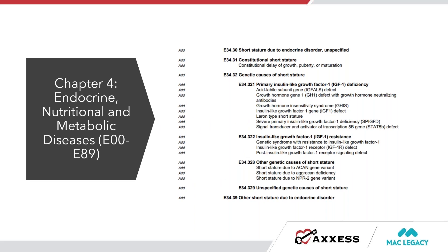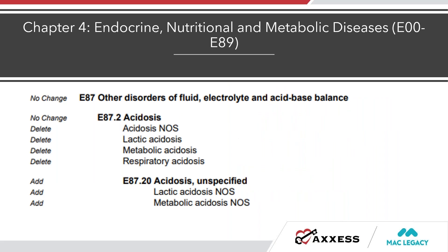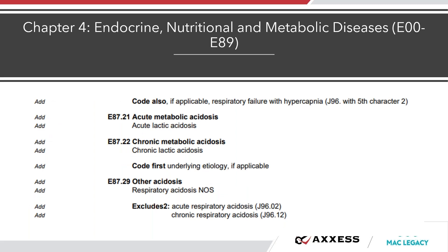Expanded codes for genetic causes of short stature have been added. We now also have additional codes for acidosis. These don't get us a comorbidity adjustment, but they do fall into the MMTA other clinical grouping. Before, we had no specific code for whether acidosis was acute, chronic, or respiratory — now we have better codes to fully expand that.